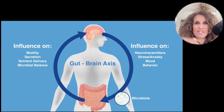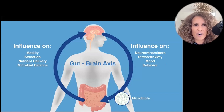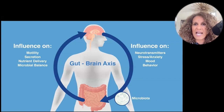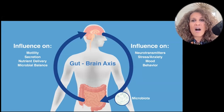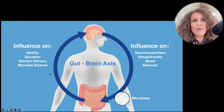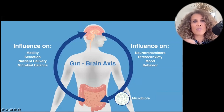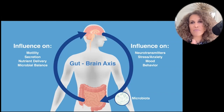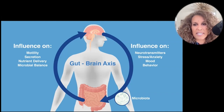I want to tell you about the gut-brain axis. It's bidirectional. Neurotransmitters that can control stress and anxiety, mood, behavior, et cetera, are very much influenced by what's going on in the microbiome. Similarly, what's going on in the microbiome is influencing the brain. The brain is influencing motility, secretion, nutrient delivery, microbial balance, and the gut is influencing your neurotransmitters, mood, stress, et cetera. So it's all very much related.